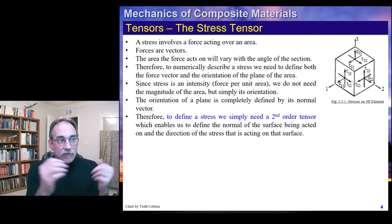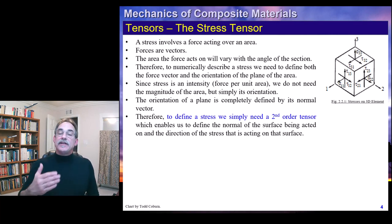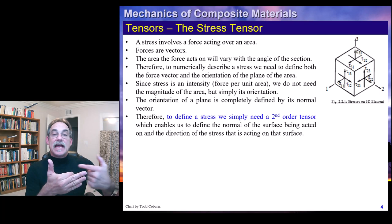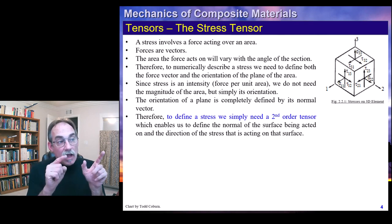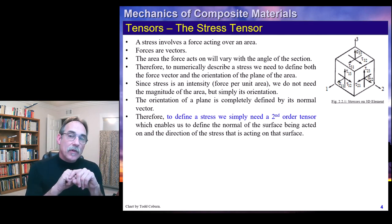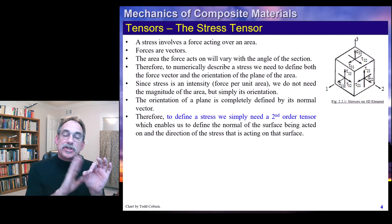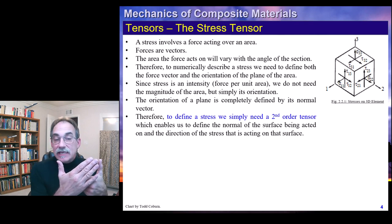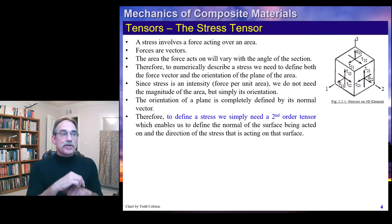We can also see shear stress tau-1,2 on the one face. That stress acts on the one face — the face with a normal in the one direction — but the stress itself acts in the two direction. Since the stress is parallel to the face, it's called shear stress, often given the symbol tau. But in tensor notation, we can still use sigma: it's on the one face, but the stress is in the two direction — hence sigma-1,2 is by definition a shear stress.